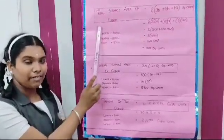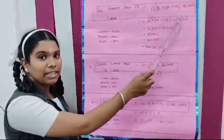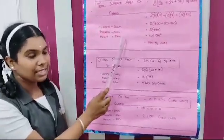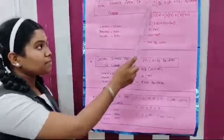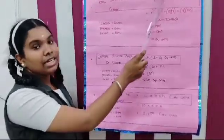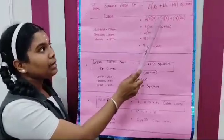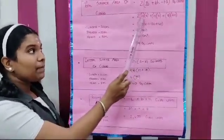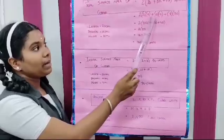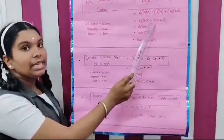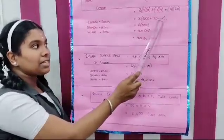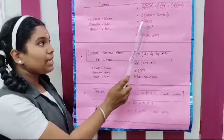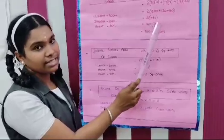Let us calculate total surface area, lateral surface area and volume of the cuboid. Total surface area of a cuboid is equal to 2 into (length × breadth + breadth × height + height × length) square units. Here, length is 20 cm, breadth is 15 cm and height is 8 cm. Substituting: 2 into (20 × 15 + 15 × 8 + 8 × 20), which gives 2 into (300 + 120 + 160). By adding the three values we get 580. By multiplying 580 by 2, we get 1160 cm².